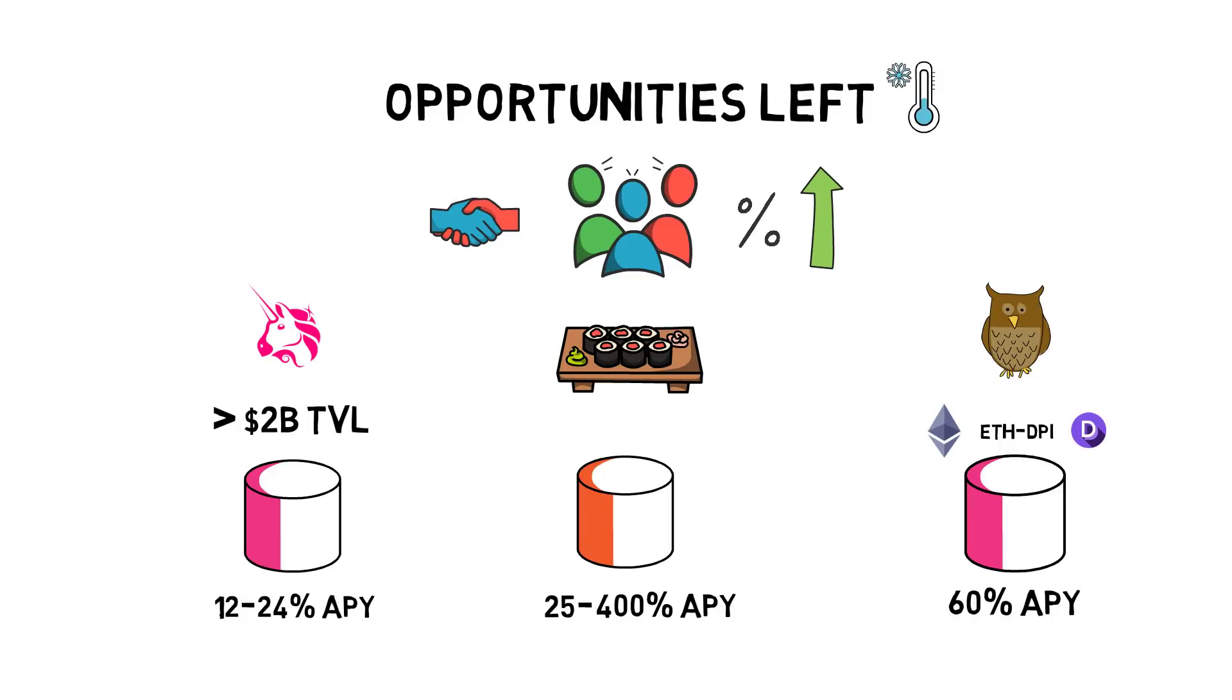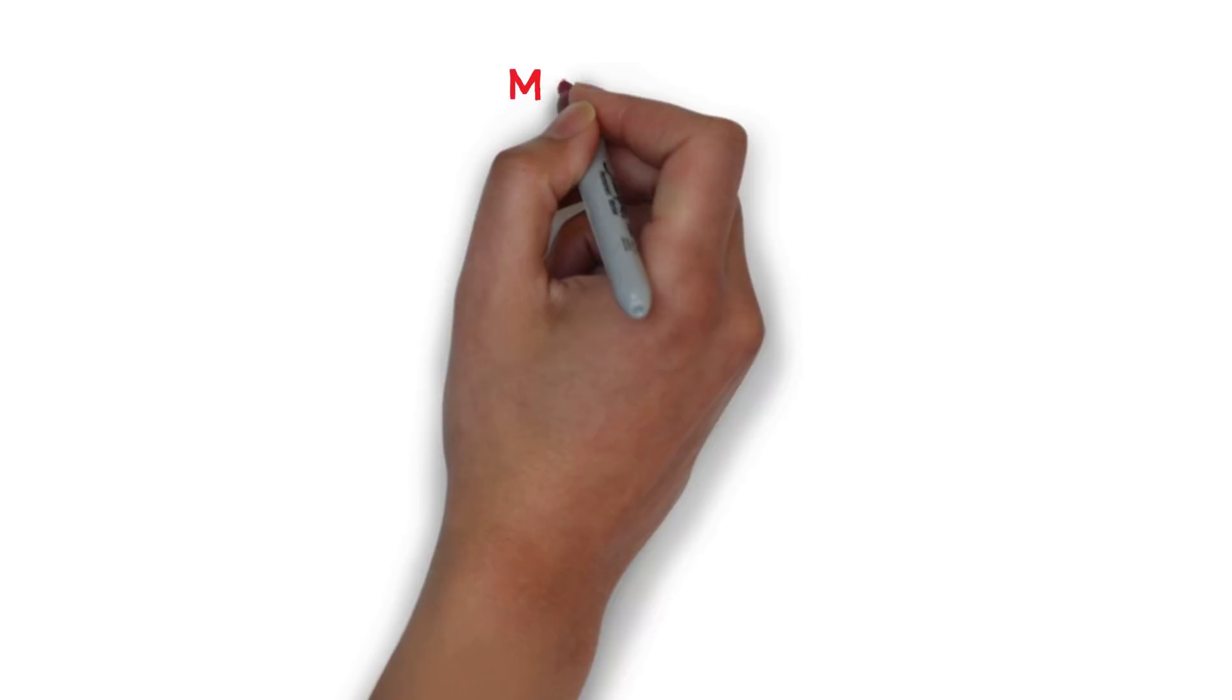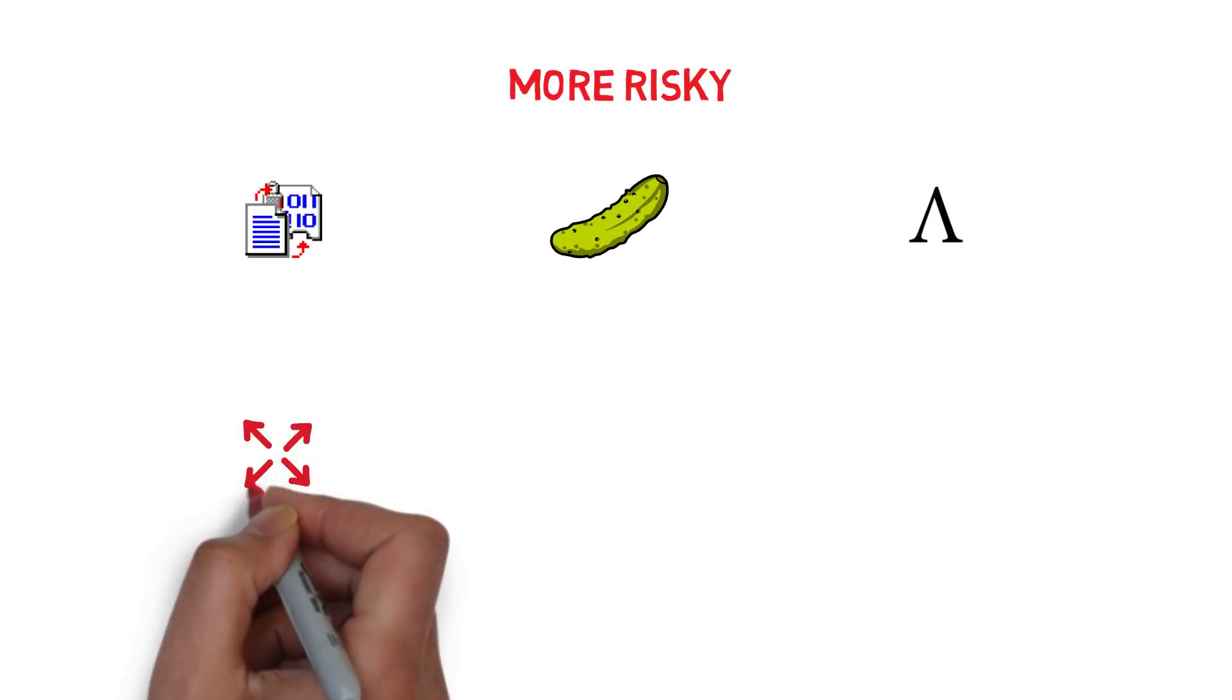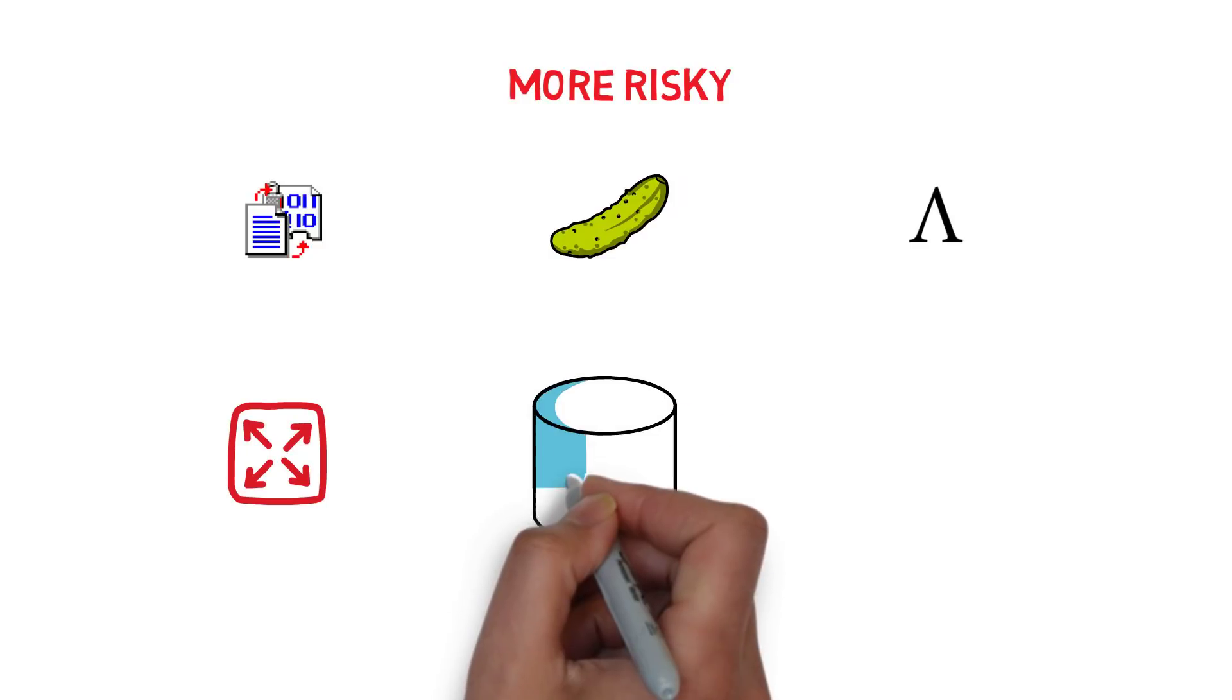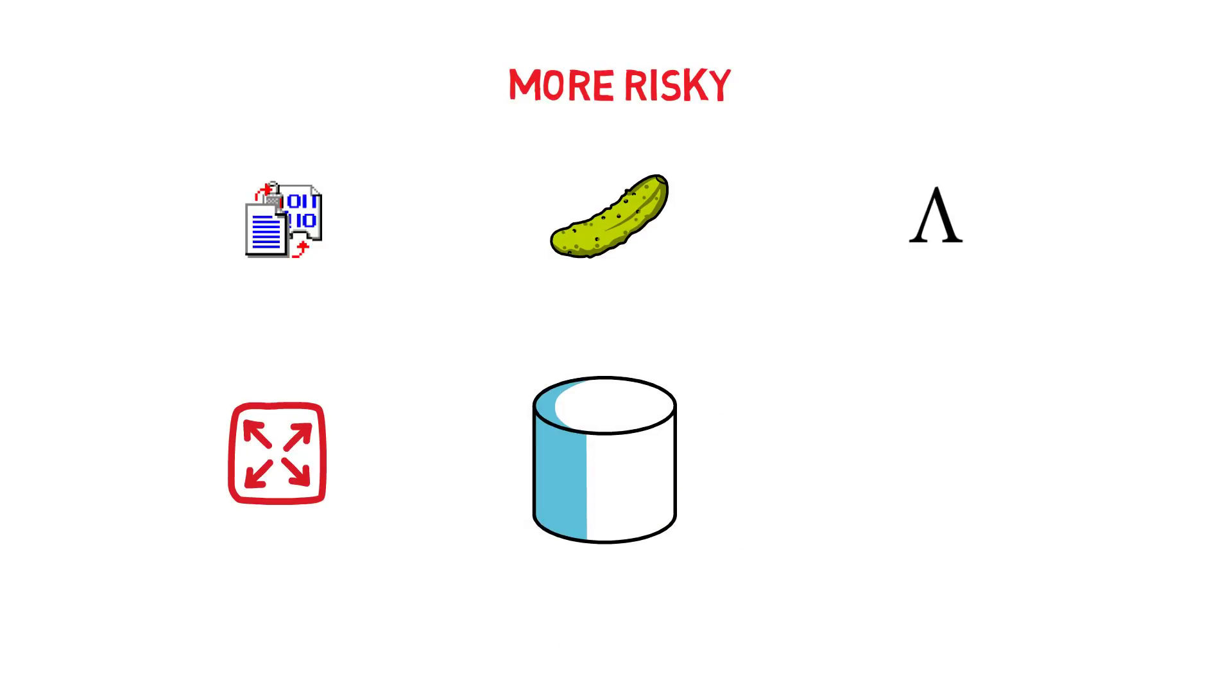There is also a lot of other fairly popular, but more risky options such as Pickle, Core or Ample. In these projects, the highest APY is usually generated by participating in a pool that requires holding their corresponding token, also known as Pool 2.